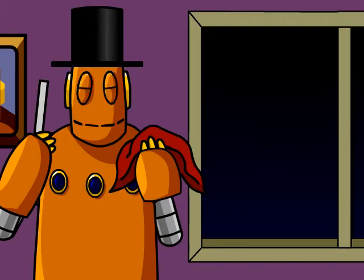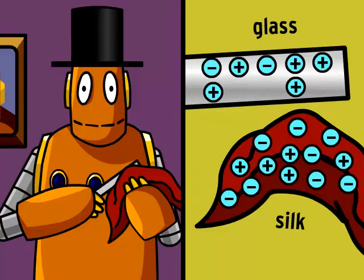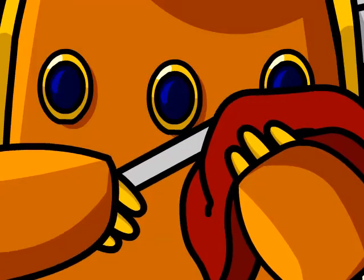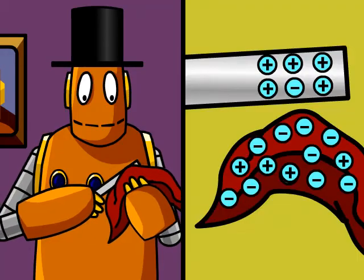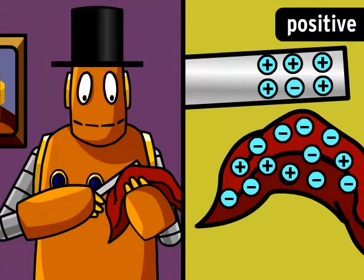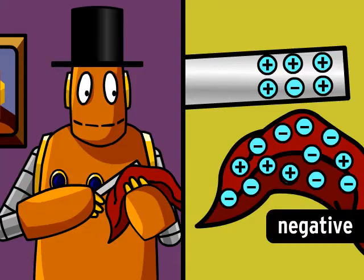Each of these objects has a neutral charge. Silk holds its electrons more tightly than glass, so when you rub them together, electrons can be transferred from the glass to the silk. The more you rub them together, the more powerful the charge will be. Because the glass rod ends up with fewer electrons, it has a positive static charge. The silk cloth, which now has more electrons, has a negative static charge.